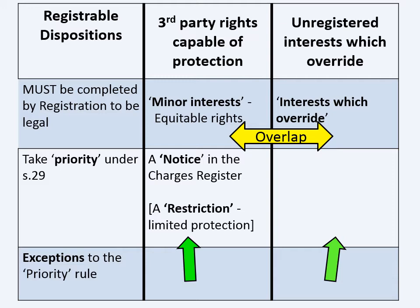To summarize: section 29 says that when registered, the person who has registered the disposition takes the land free from all existing proprietary rights, except for registered charges, protected registered interests by notice, and interests which override.